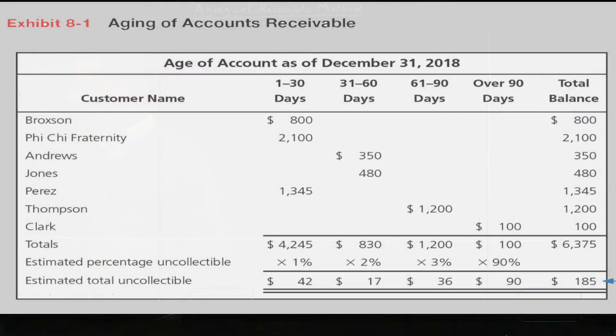So for example, we give 1% for the group of amounts owed between one day and 30 days. So we multiply the 1% by the $4,245. And then the second column, we give a higher percentage, 2%. So 2% multiplied by $830, we get $17. And then group 3, we give 3%, multiply it by $1,200, you get $36.